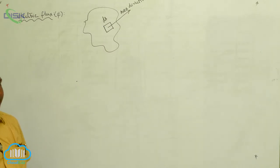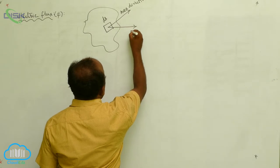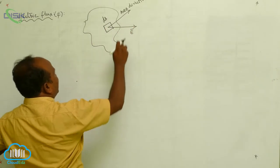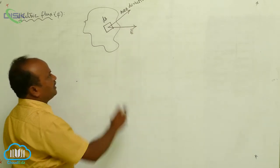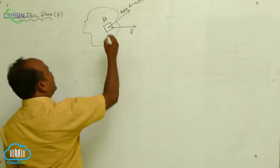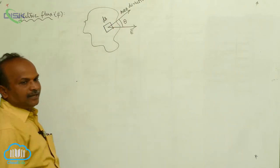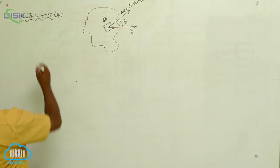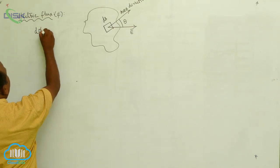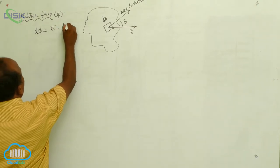This area is in an electric field. What is the strength of the electric field? Let us consider the strength of the electric field as E. At this point, the electric field is represented by E, and the direction of electric field intensity is indicated. The angle between the area vector and the electric field intensity is theta. The electric flux through the small area can be defined as: d phi equals the dot product of electric field intensity E and the area vector dS.